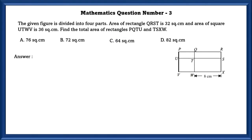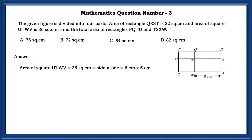Mathematics Question No. 3. The given figure is divided into 4 parts. Area of rectangle QRST is 32 square centimeters, and area of square UTWV is 36 square centimeters. Find the total area of rectangles PQTU and TSXW. Area of UTWV is 36 square centimeters. Using this, we can find one side: 6 × 6 = 36. So TW = UT = UV = VW = 6 centimeters.